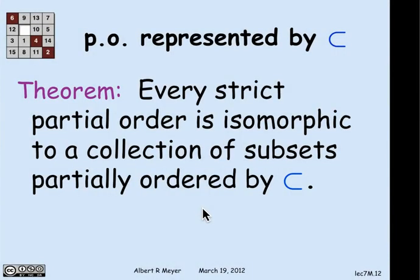And the theorem that we illustrated with that example of proper divides and proper subset is that in fact, every strict partial order is isomorphic to some collection of subsets partially ordered by less than. So this is a kind of a representation theorem. If you want to know what kinds of things are partial orders, the answer is that a strict partial order is something that looks like a bunch of sets under containment.